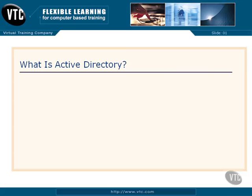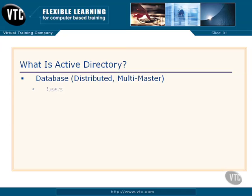Let's get started with a simple question that needs to be answered right up front: exactly what is Active Directory? Active Directory is quite simply a database. It's a distributed database, meaning it's stored in multiple places. And it's a multi-master database, meaning I can make changes in most instances — we'll talk about those exceptions later — and it will automatically be replicated around to the other locations.